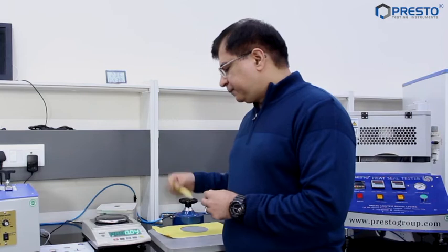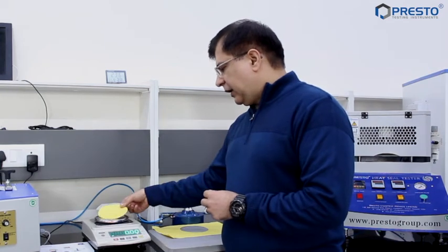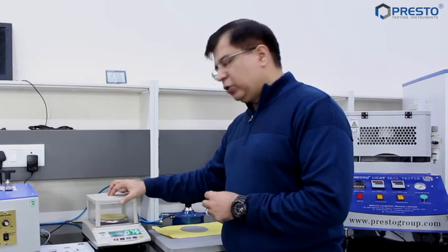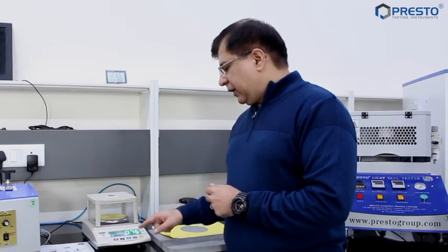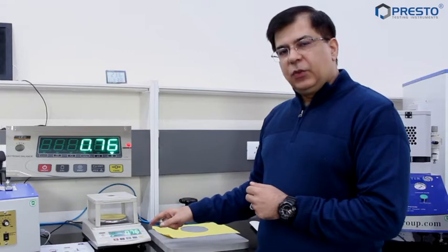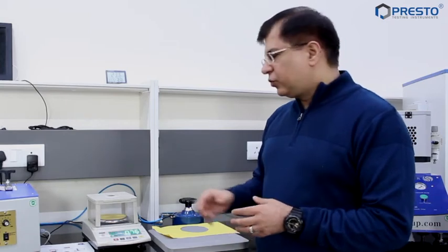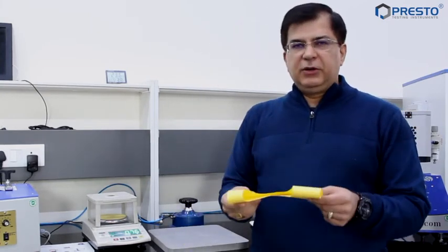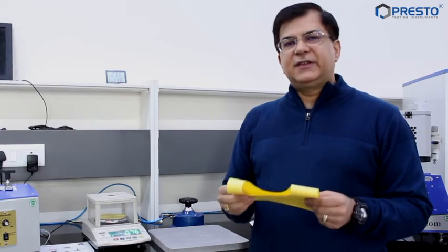Put the windshield back. Here we can see 0.76, which means that 0.76 multiplied by 100 is the GSM, which comes to 76 GSM. So this paper which you see in my hands is 76 GSM.